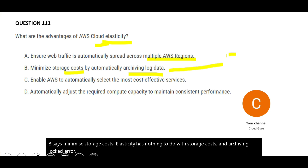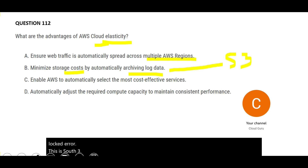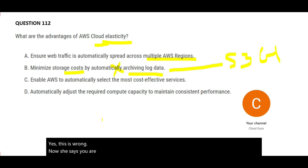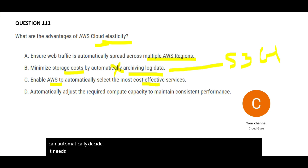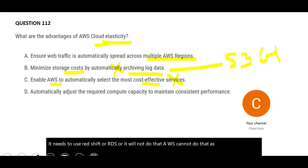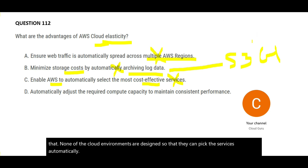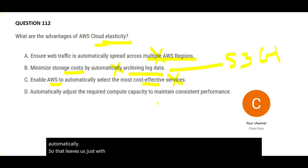Option C says AWS will automatically select the most cost-effective service, meaning it could decide between Redshift, RDS, or Aurora — but that is wrong. No cloud environment is designed to pick services automatically. That eliminates option C, leaving only option D as the answer.